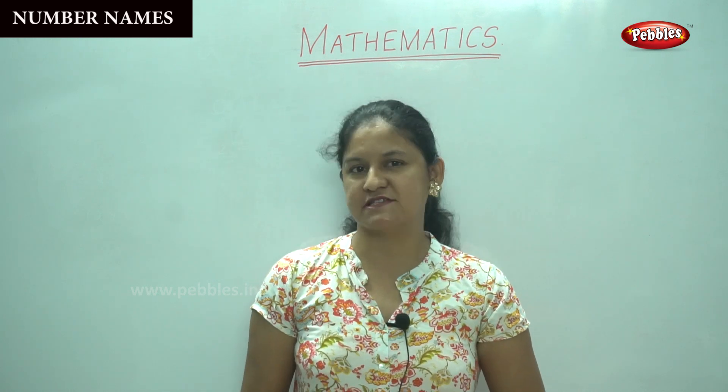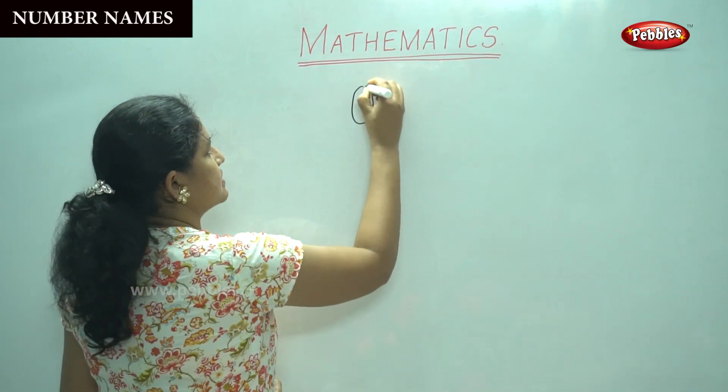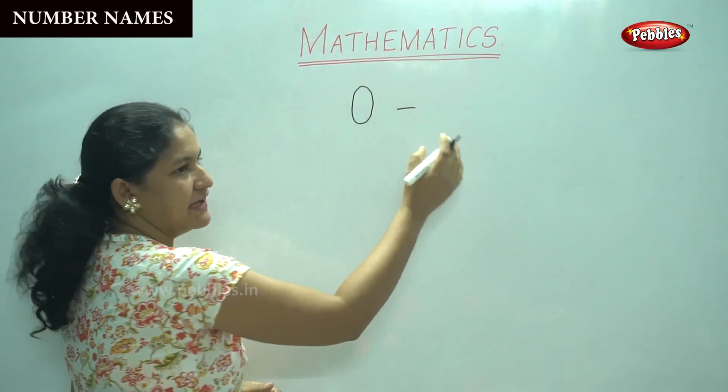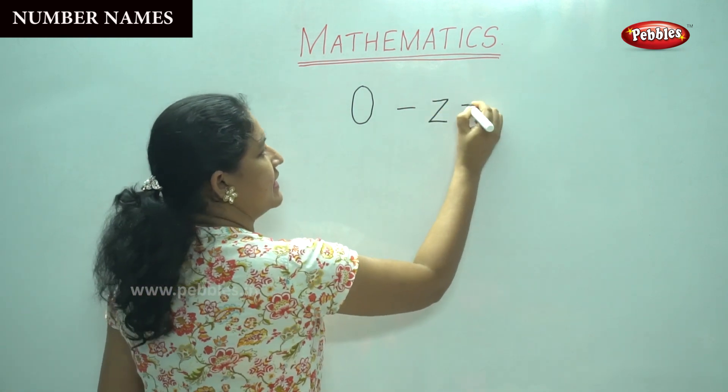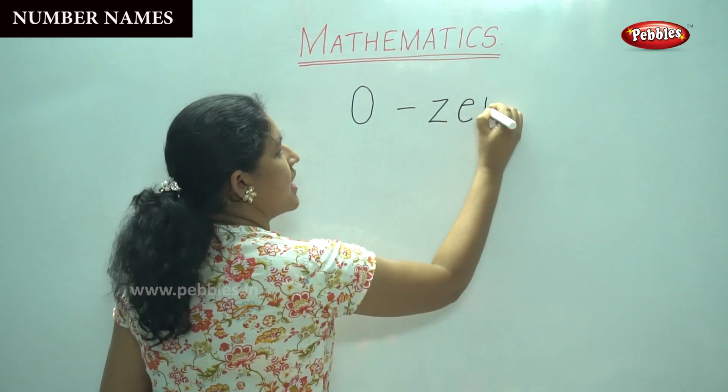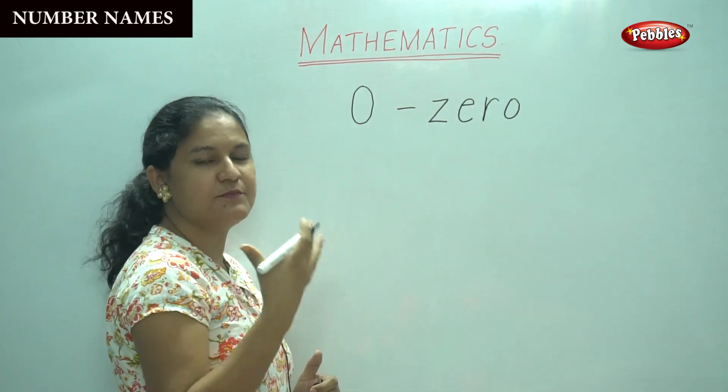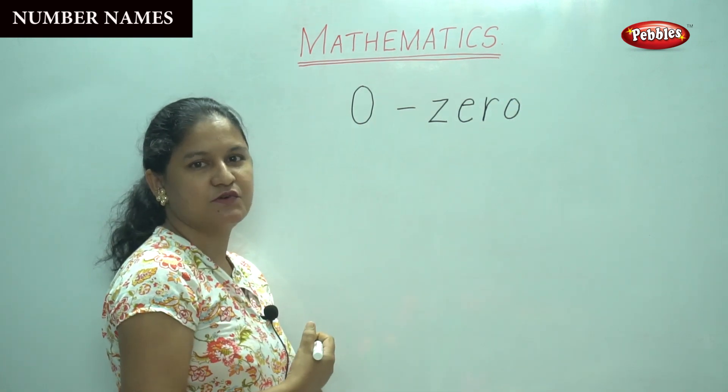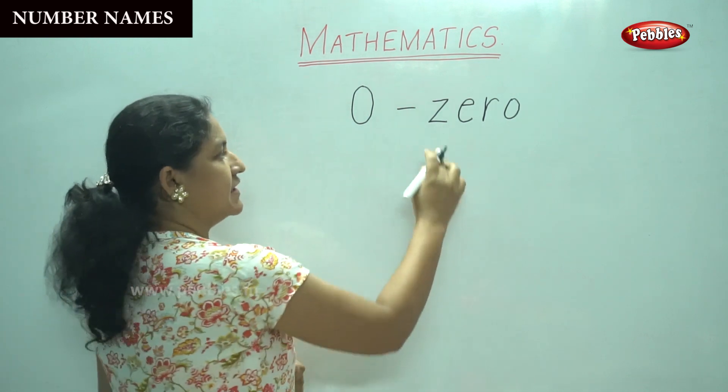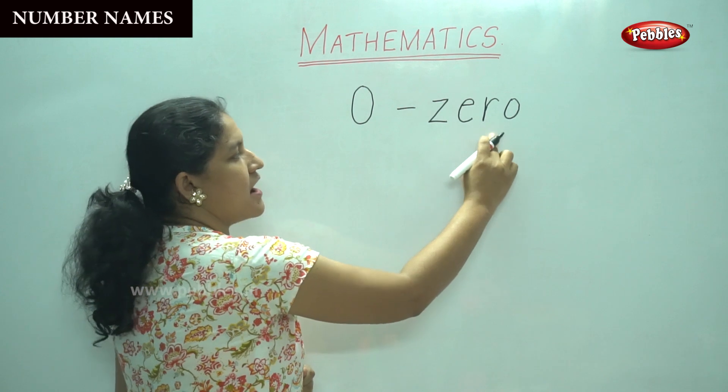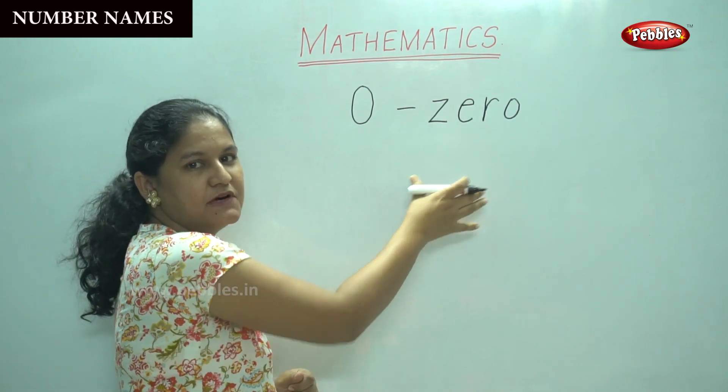So we will start with the number 0. So you will see the spelling for the number 0: Z-E-R-O. I hope you are repeating it after me. So shall we say it again? The number 0: Z-E-R-O. This is the number name for number 0.